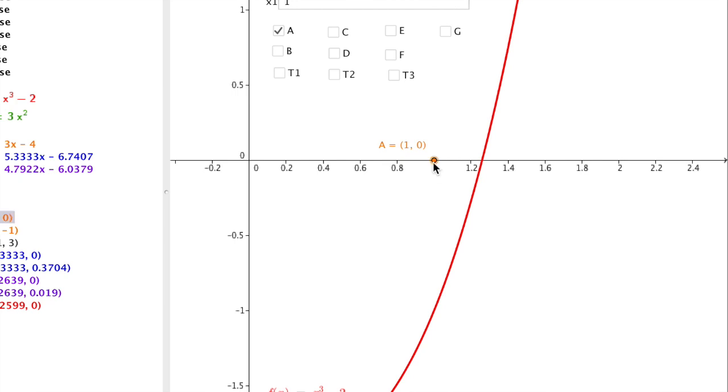We locate f of that guess which is on the function, and when x is 1 on the function, y = -1 in our example. Then we create the tangent line.